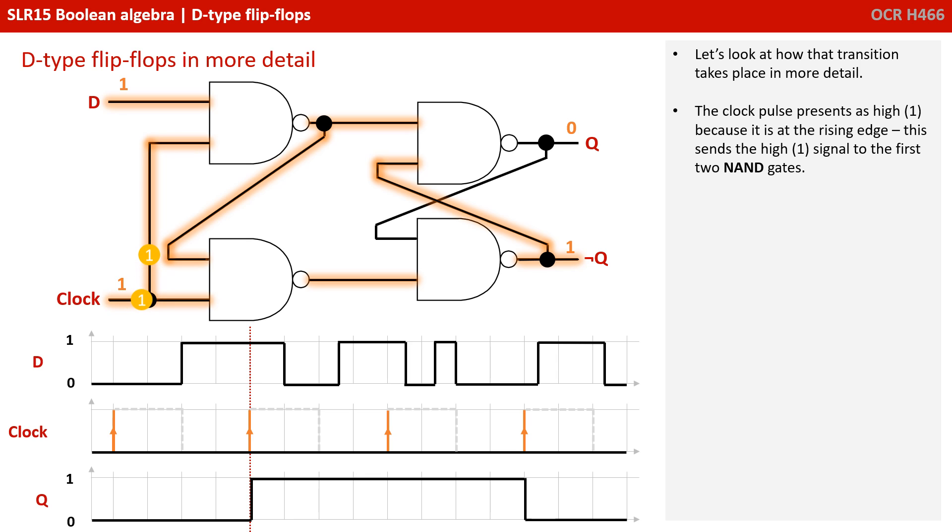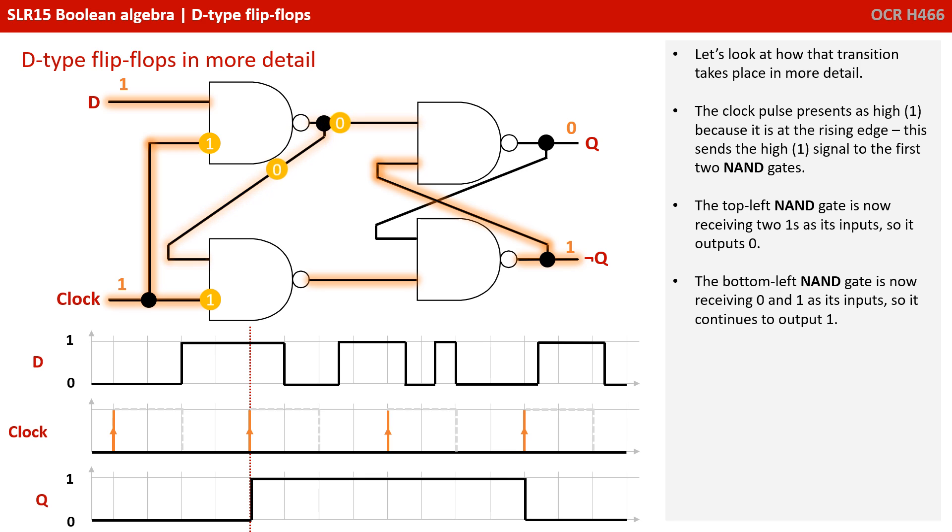Let's look at how that transition takes place in more detail. The clock pulse presents as high one because it's at its rising edge. This sends the high or one signal to the first two NAND gates. The top left NAND gate is now receiving two ones as its input, so it outputs zero. The bottom left NAND gate is now receiving zero and one as its inputs, so it continues to output one.